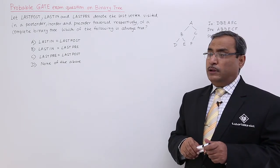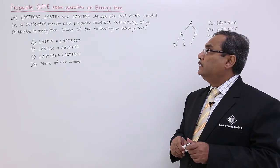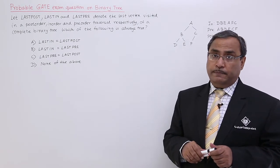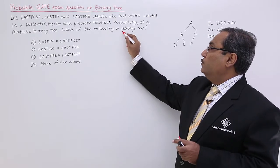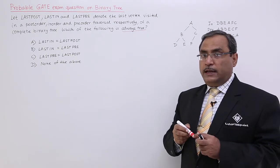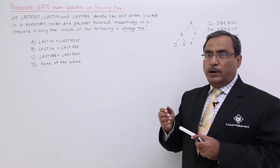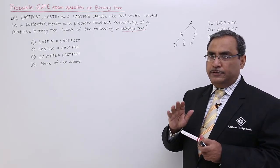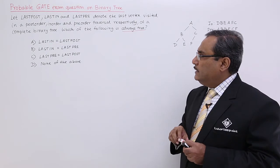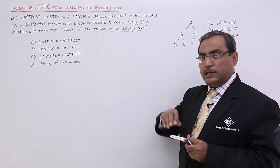The question is that, let LASTPOST, LASTIN and LASTPRE denote the last vertex visited in a post-order, in-order and pre-order traversals respectively of a complete binary tree. One thing has to be noted that, it is a complete binary tree. Another thing has to be noted here is that, which is always true. That means, I should be giving one answer, which will be generic for all complete binary trees.